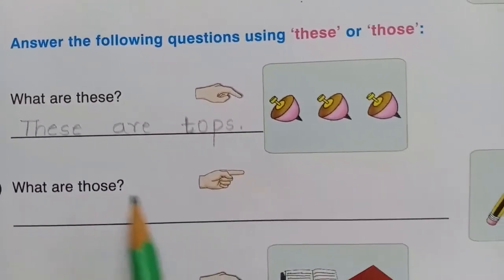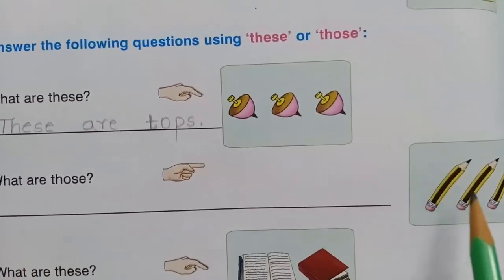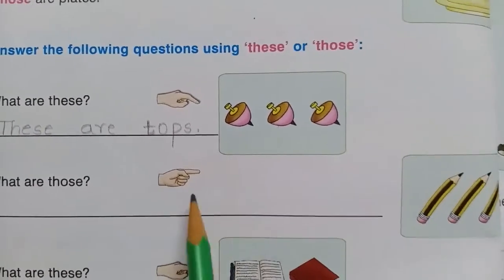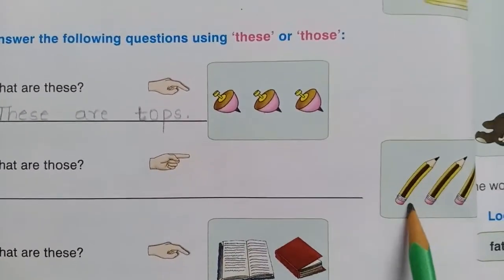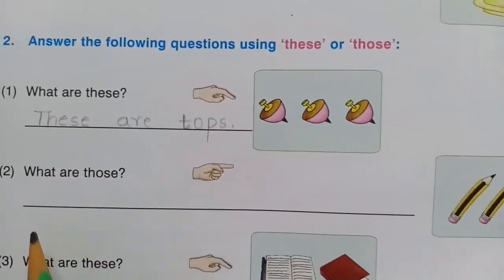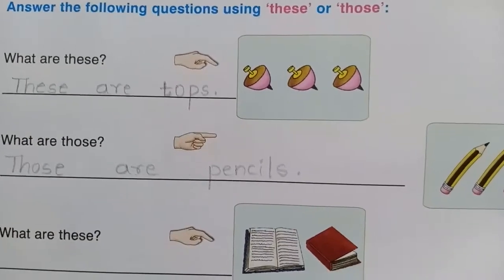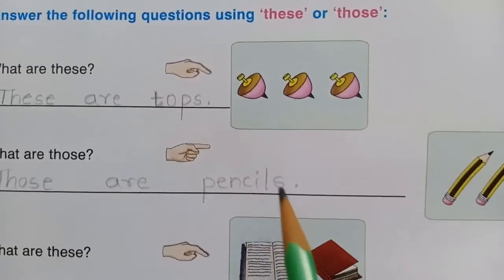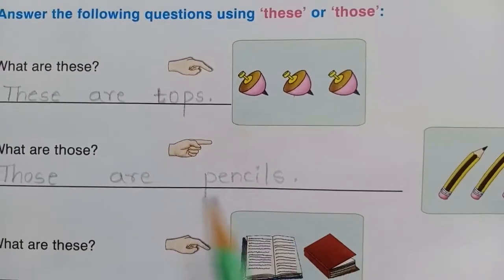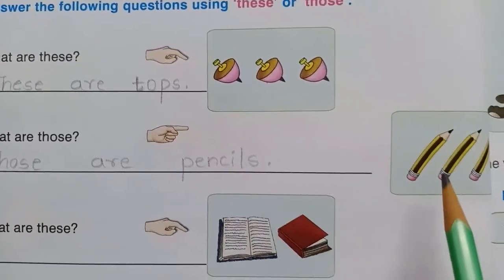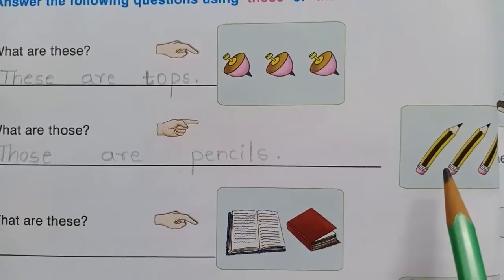Second one: What are those? The objects are far away. Those are pencils. Next.